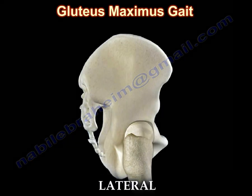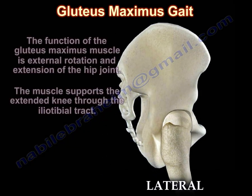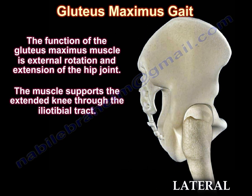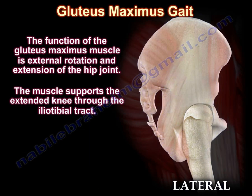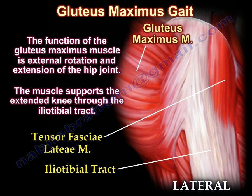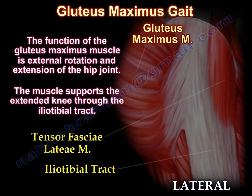The function of the gluteus maximus muscle is external rotation and extension of the hip joint. The muscle supports the extended knee through the iliotibial tract.